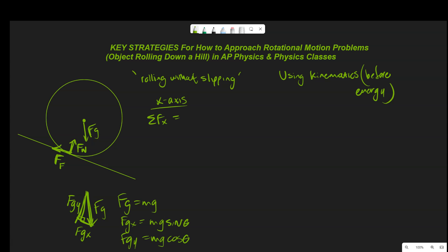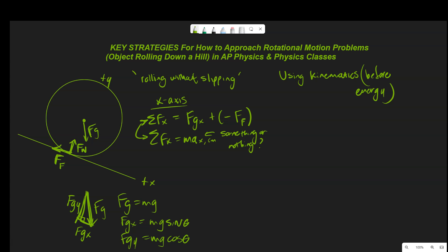Going back to this: there's an FGX component in the x-axis. I'll define right as positive x and up as positive y. We also have the force due to friction. The second line of the sum of the forces strategy is to write Newton's second law. We ask: is this something or nothing? In this case it's something — the ball is rolling down the hill and accelerating in the x-axis. So: FGX minus the force due to friction equals mass times acceleration in x.